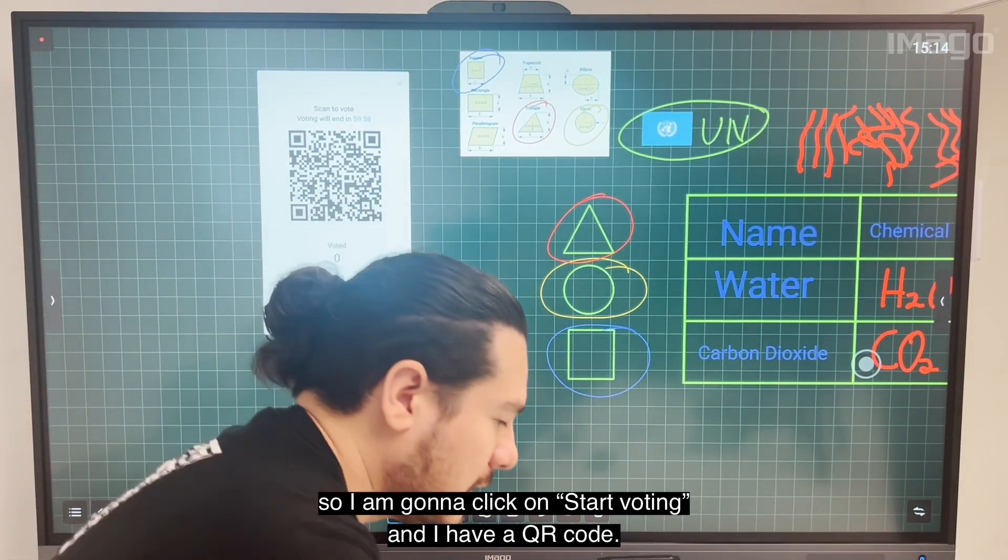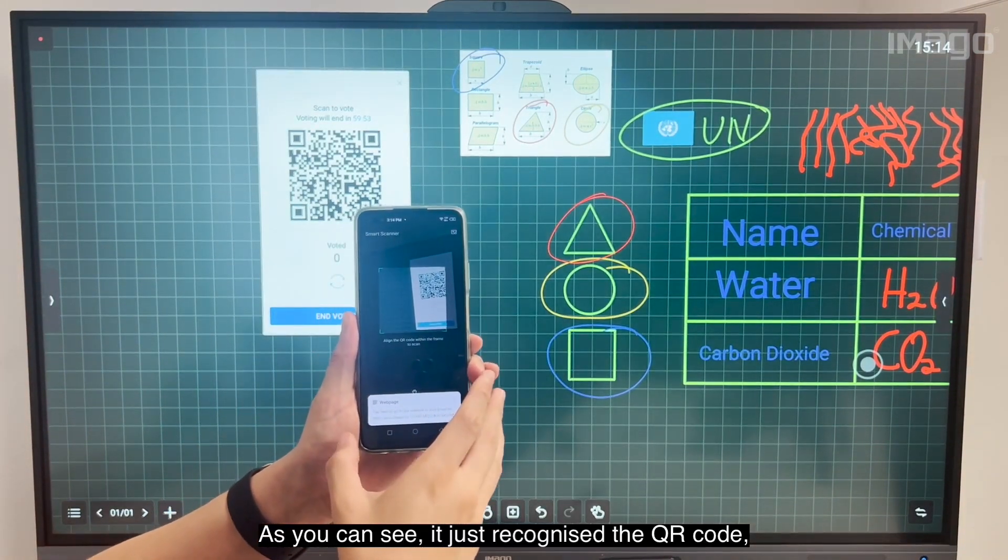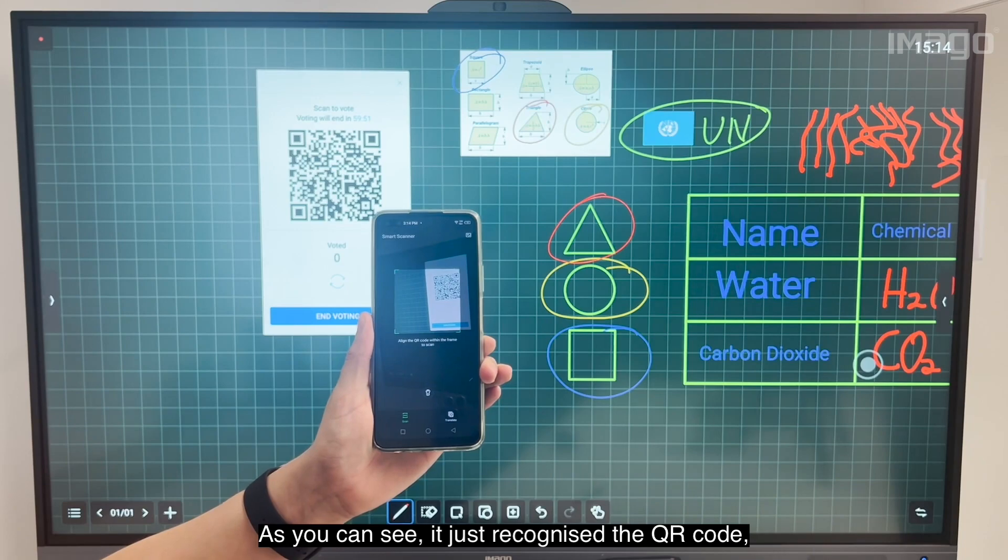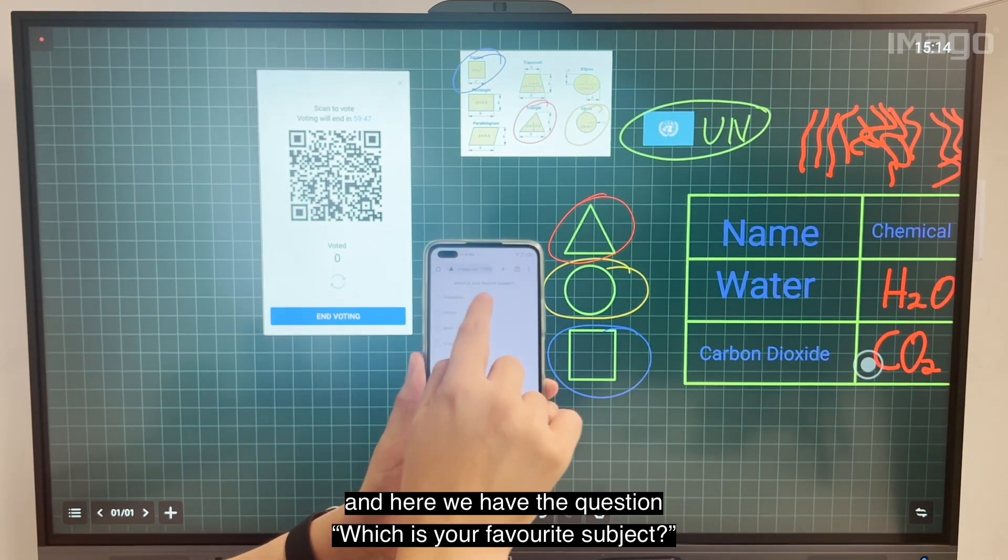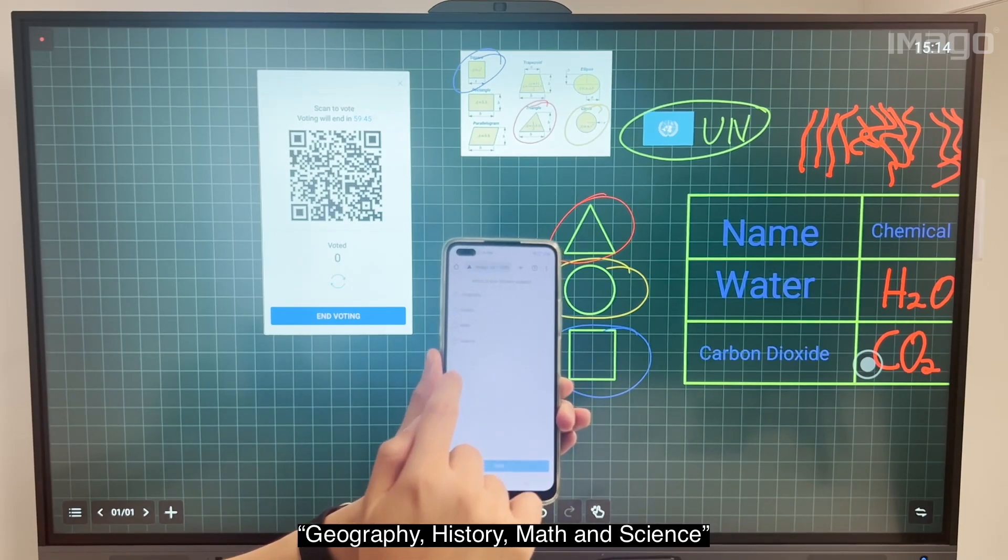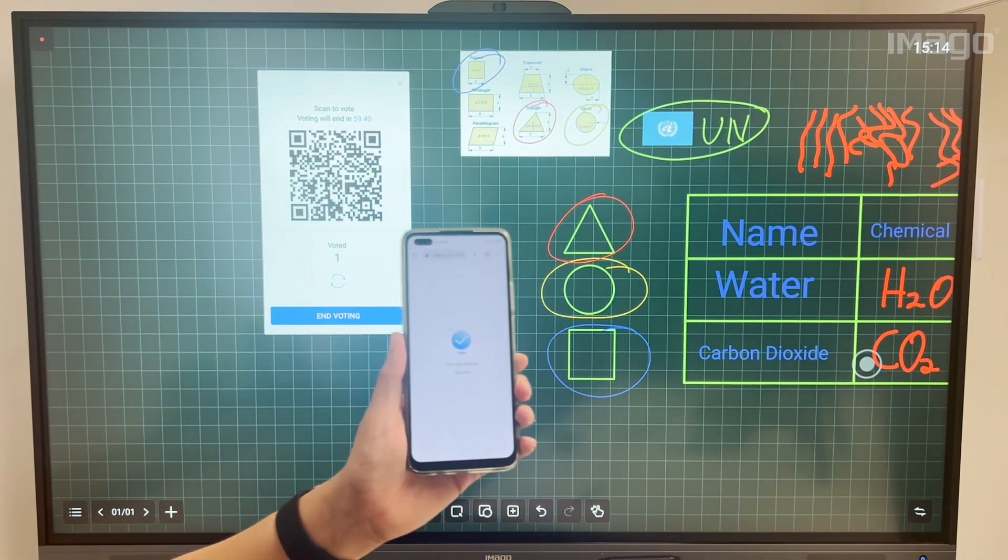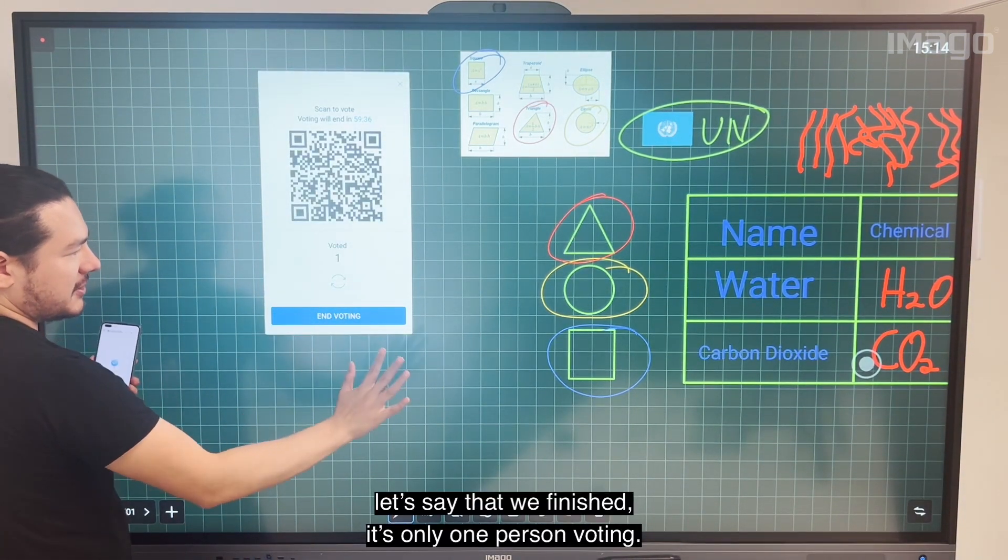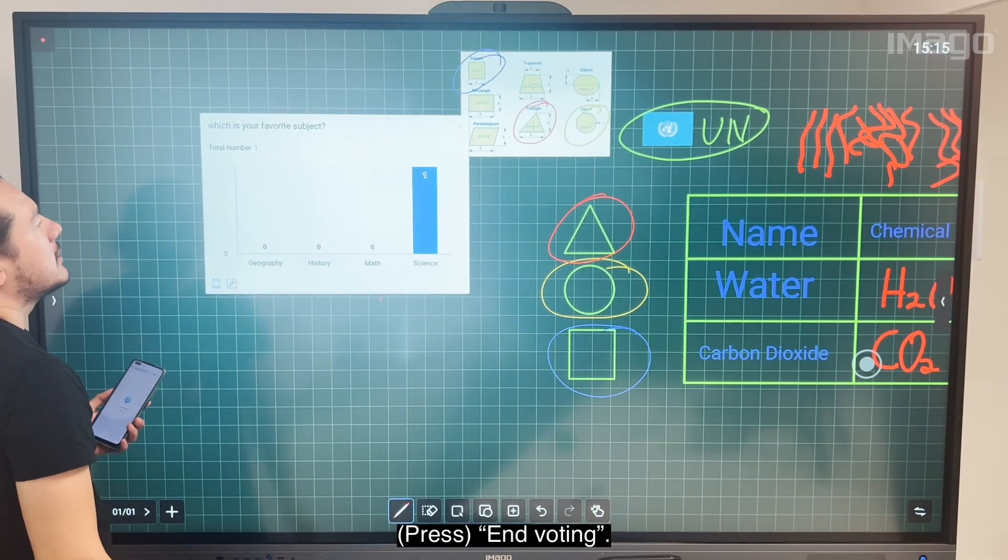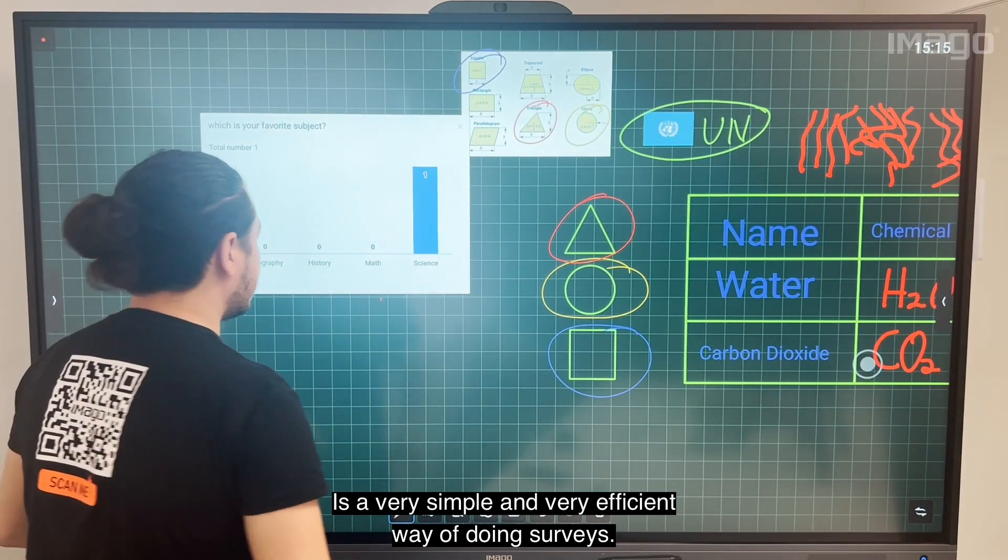I have a QR code here. I have a phone and as you can see, it recognizes the QR code and I go to the website. Here I have the question: Which is your favorite subject? Geography, History, Math, Science. I will click Science, Vote. I have here one vote. Let's say that we finish - it's only one person voting. Here is one person who selected Science. It's very simple and very efficient, this way of doing surveys.